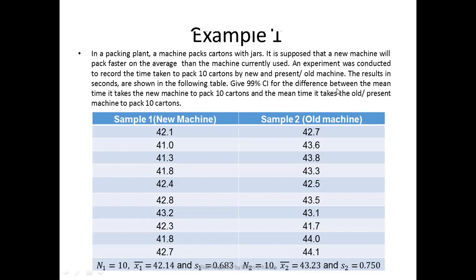We are trying to find how much better the new machine is compared to the old machine. The more this estimate comes close to zero, the more it indicates there is no difference between the two. The further it goes away from zero — whether on the negative or positive side — the more it indicates there is a difference between the new machine and the old machine. That is what we are trying to estimate.